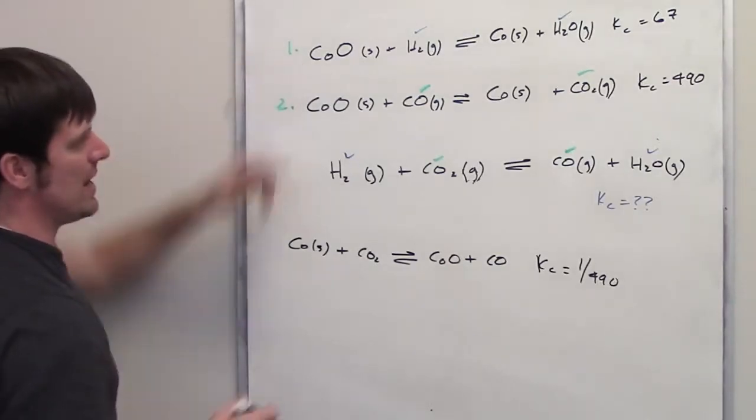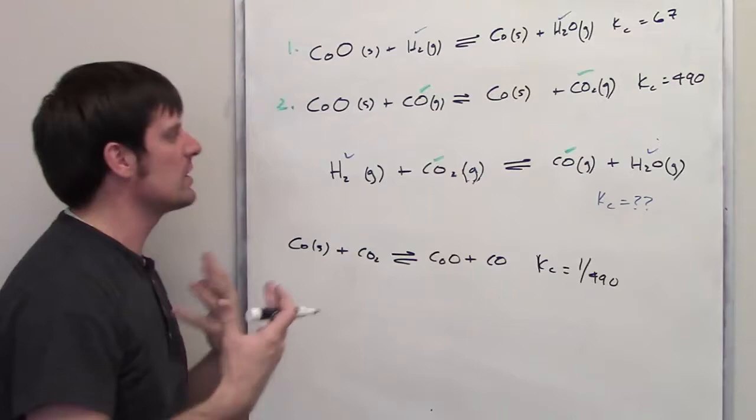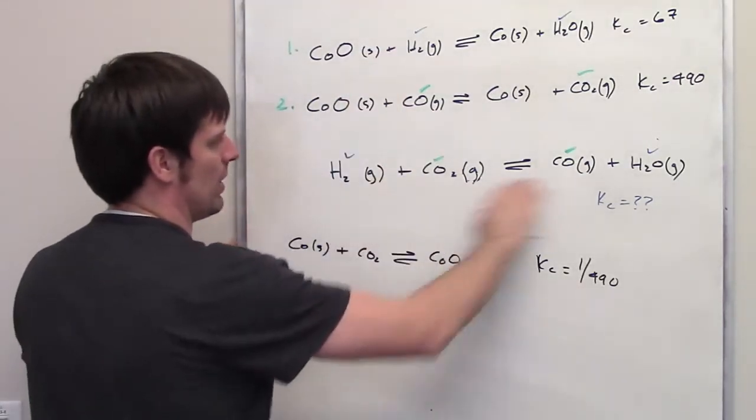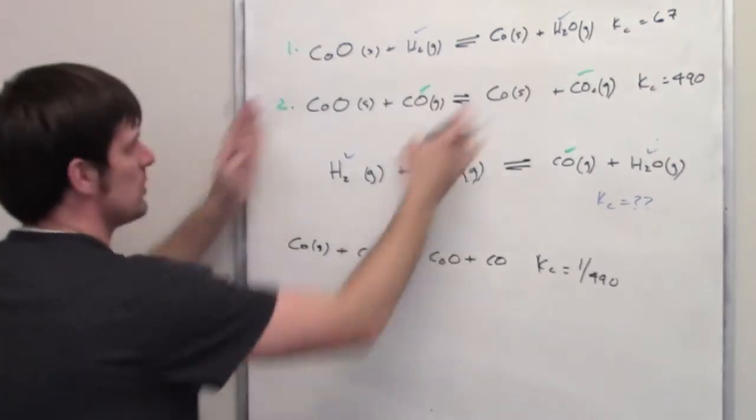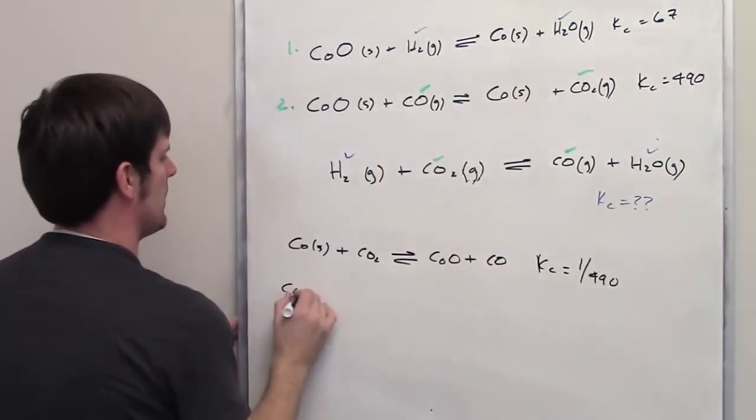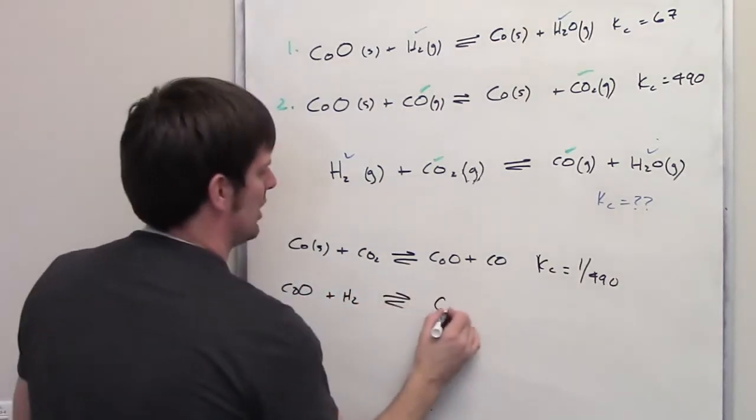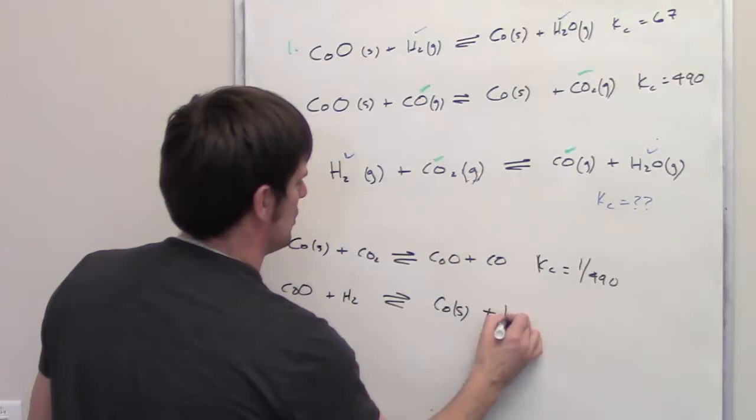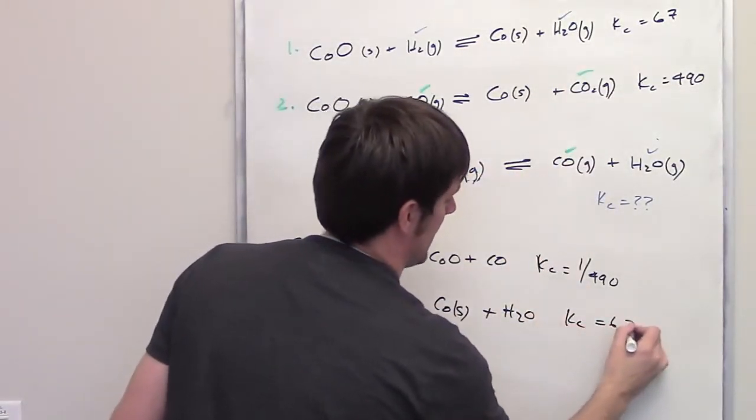Now you'll notice that equation 1 here, I didn't have to do anything to it because everything happened to be on the right or the correct side with respect to where it lies in the final overall equation. I also didn't have to multiply it by anything. So what I'm going to do is I'm going to take equation 1 and I'm just going to bring it straight down here. So I've got cobalt oxide plus H2 and then I've got cobalt solid plus H2O. Now, the Kc value, because I haven't made any changes, is going to be the same.